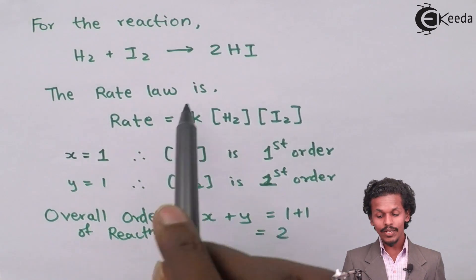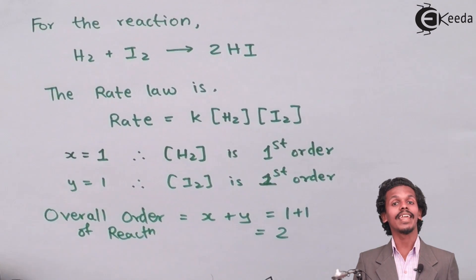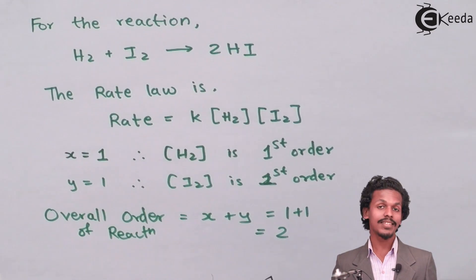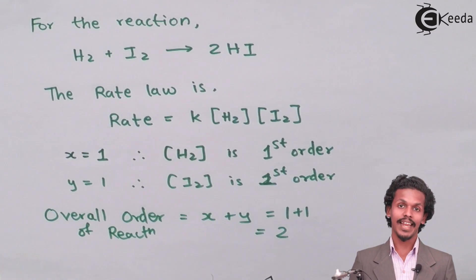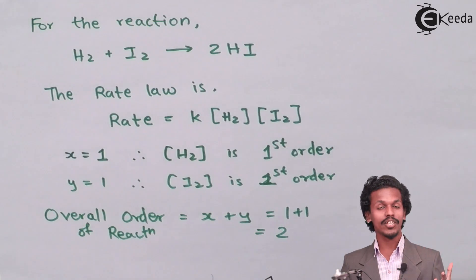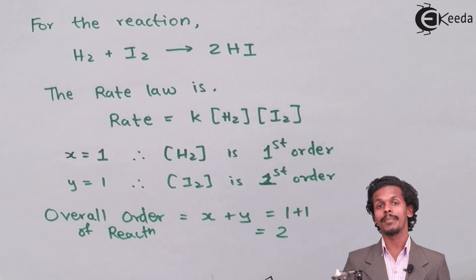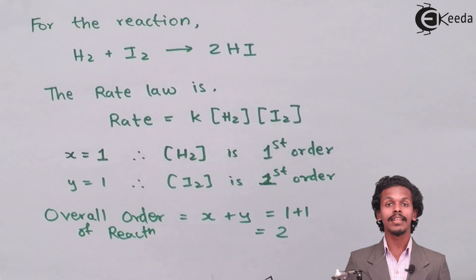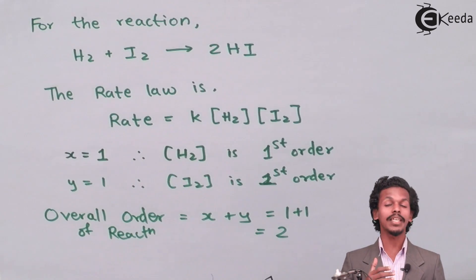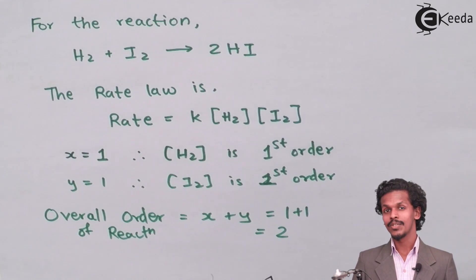So basically, this whole reaction is a second order reaction, means this reaction will depend on the two reactants, that is for H2 also and for I2 also. Suppose if this reaction would have been a first order reaction, then the whole reaction would have been dependent only on one reactant and not on the other.